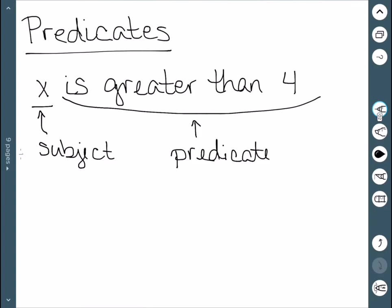Now we're going to refine this in terms of logic. We know that 'x is greater than 4' is not a proposition because it could be both true and false. However, we want to make this into a proposition.